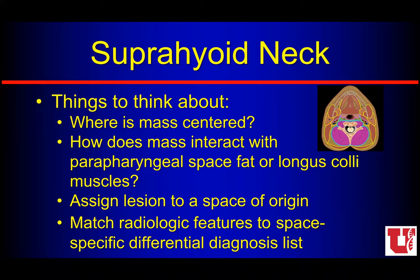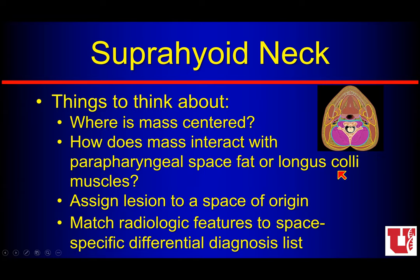I don't personally think it's so important to memorize the fascial slips and which one has which name, but it's important to understand how they define the area into spaces, and then we can think about what anatomy normally lives in that space and make a space-specific differential based on the imaging characteristics. Anytime I have an extracranial head and neck mass, I try to think about where the thing is centered — just like in the upper digestive tract — it may make a huge difference if you say a tumor is centered in the oral cavity versus the oropharynx. I'll think about how the mass interacts with either the parapharyngeal fat or the longus coli and capitis musculature, assign a space origin, and match the radiologic features to a space-specific differential.